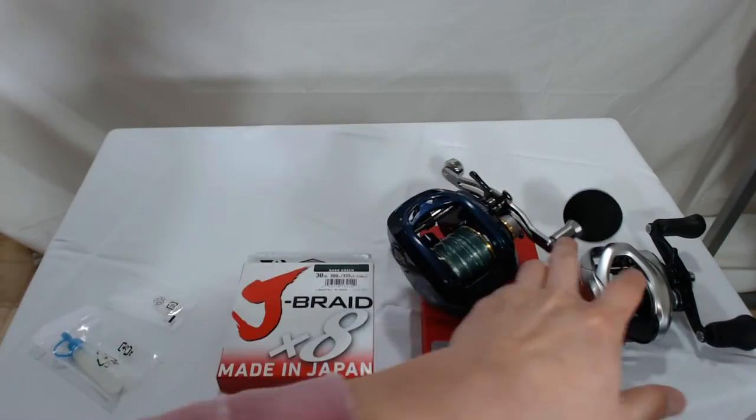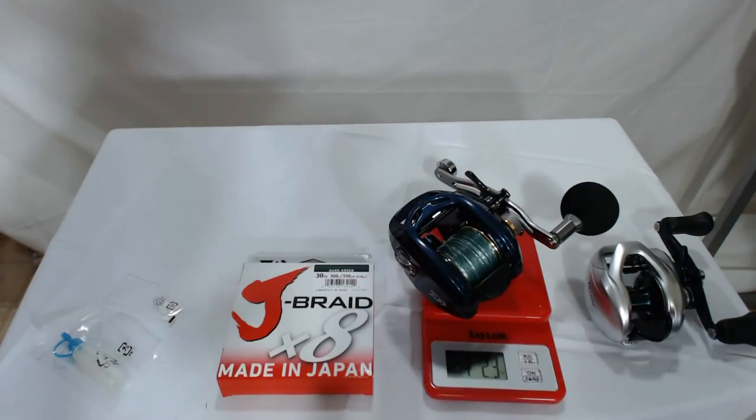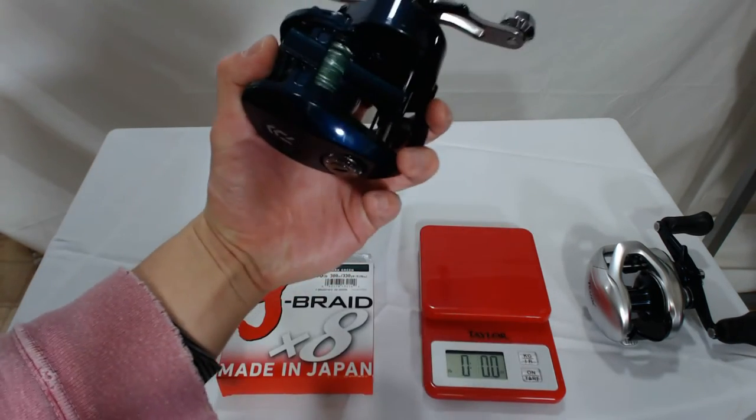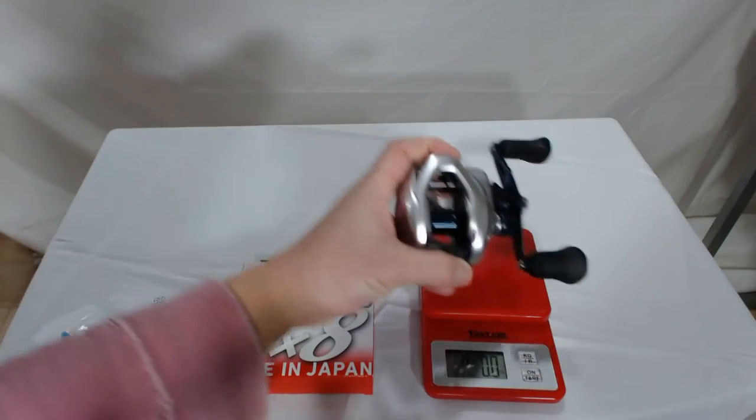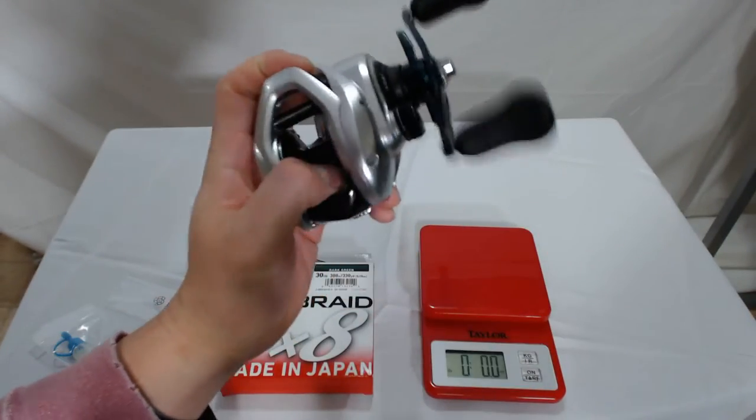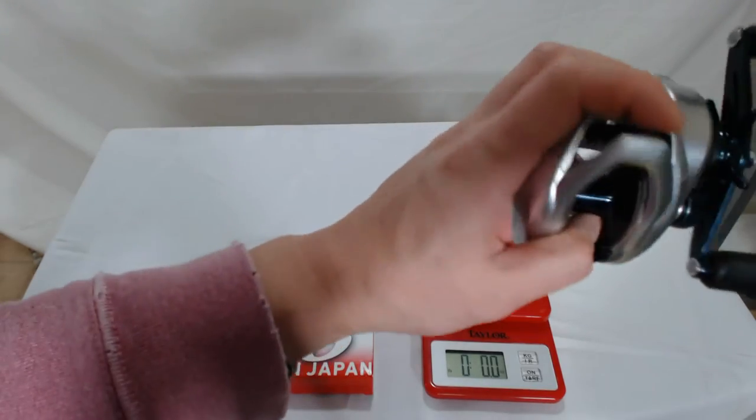And then the 400 just in comparison is of course 18.3 ounces. So I'm going to be putting on the line now. Looks like I'm going to be putting on mono backing, maybe 20 pound test.